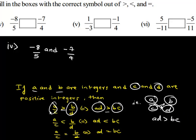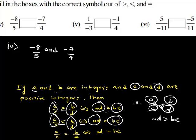Also, a upon c is less than b upon d if and only if a×d is less than b×c. And a upon c is equal to b upon d if and only if a×d is equal to b×c.